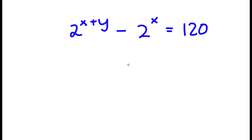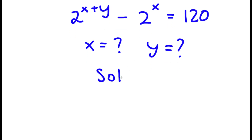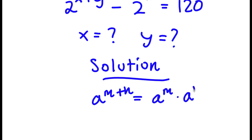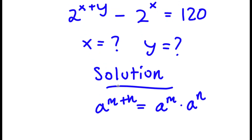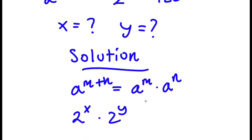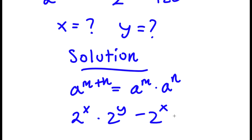In this problem, I have 2 to the power of x plus y minus 2 to the power of x is equal to 120, and I want to find the values of x and y. I'm going to use the exponent property that a to the power of m plus n equals a to the power of m times a to the power of n. So 2 to the power of x plus y becomes 2 to the power of x times 2 to the power of y, giving me 2^x times 2^y minus 2^x equals 120.